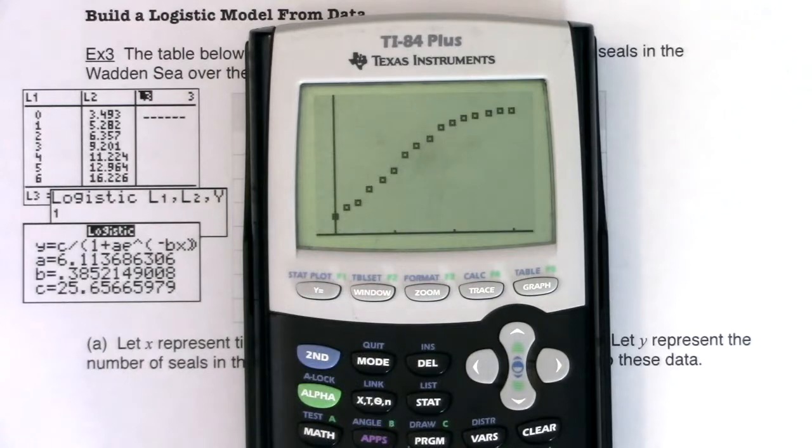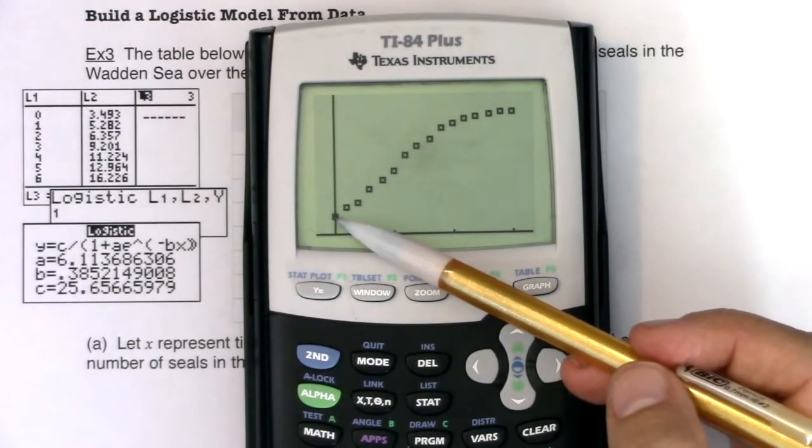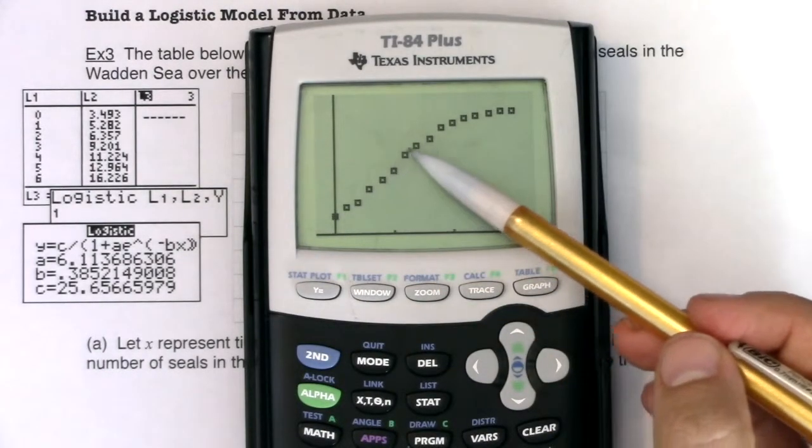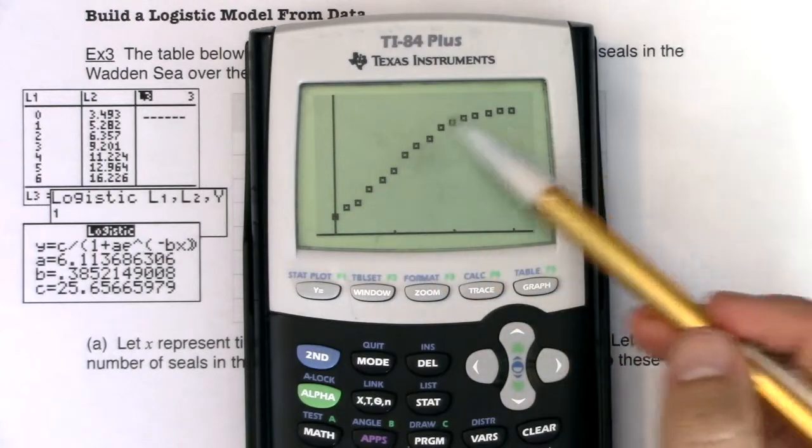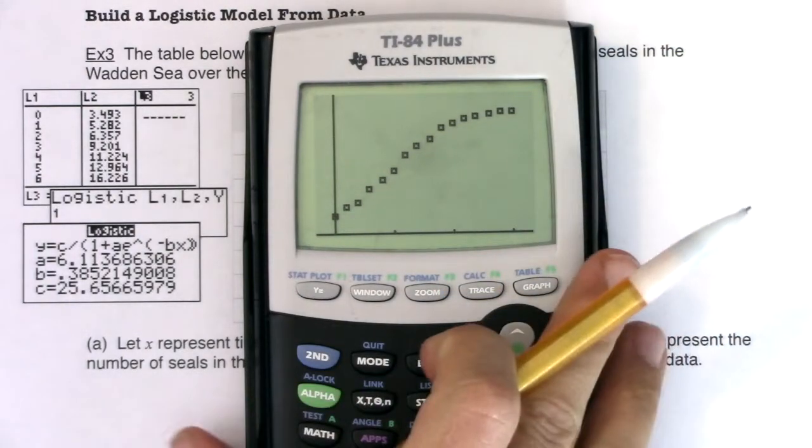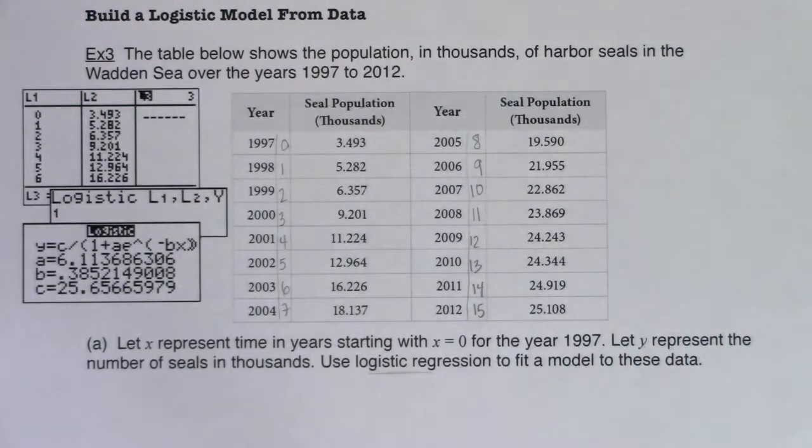But if I make a scatter plot, this does look logistic, right? It's growing at first and then you can see it capping off. It's got some kind of carrying capacity. And even if you didn't notice the graph, it doesn't really matter because the directions say use logistic regression. So I'm gonna flip over to my calculator. I'm gonna show you how to run logistic regression and then we're gonna solve the rest of this problem. I'll see you in just a bit.